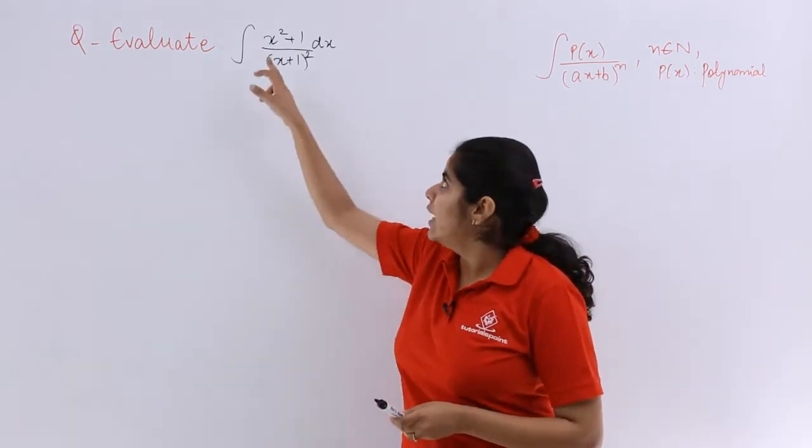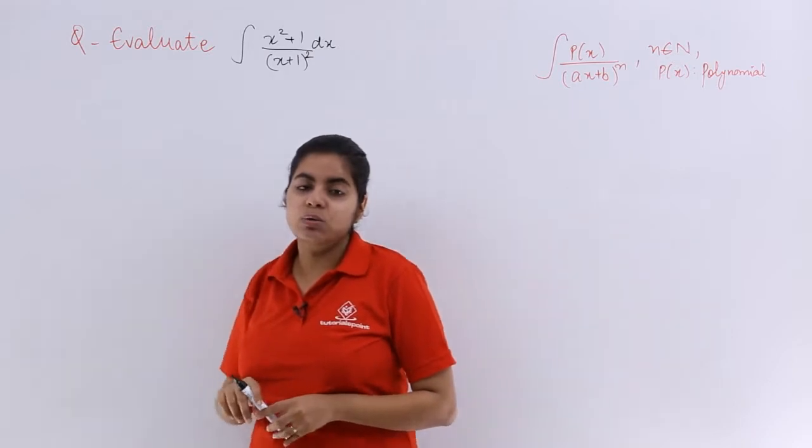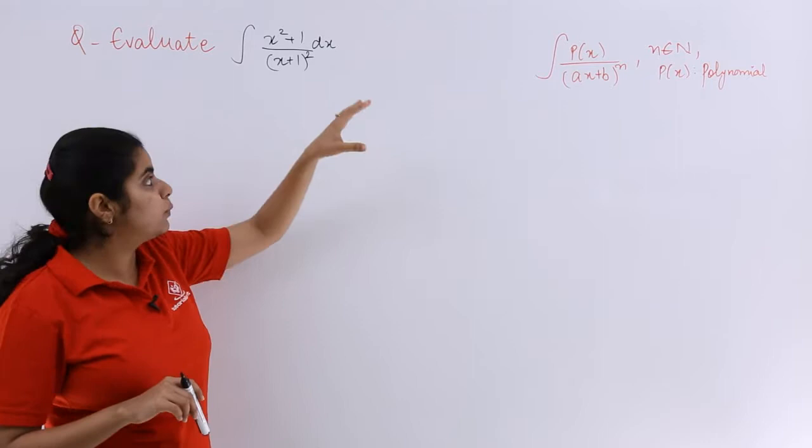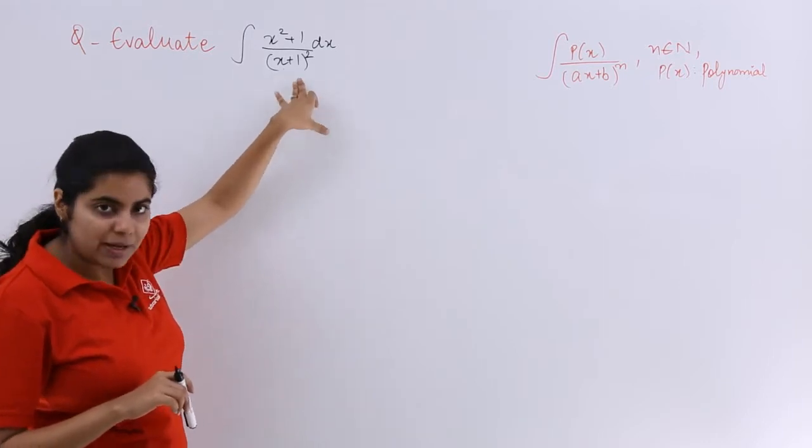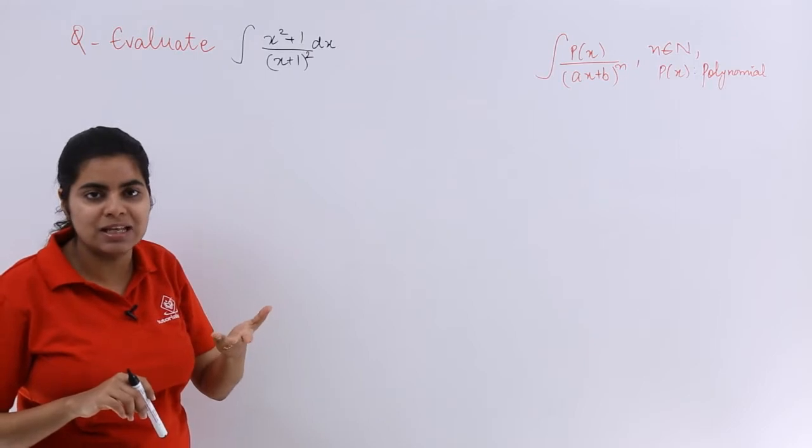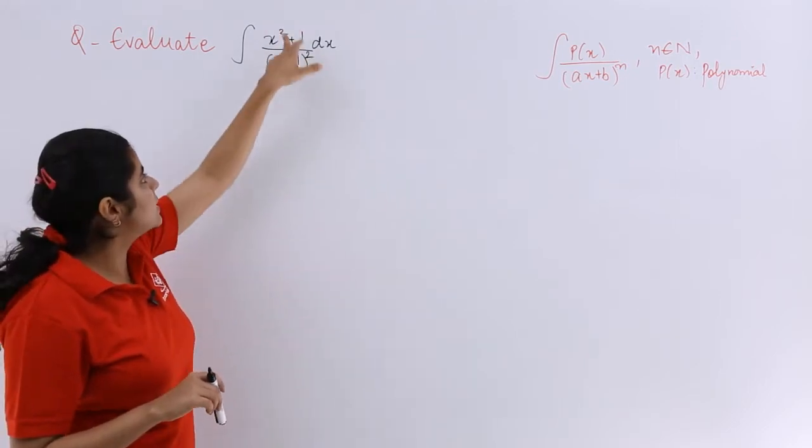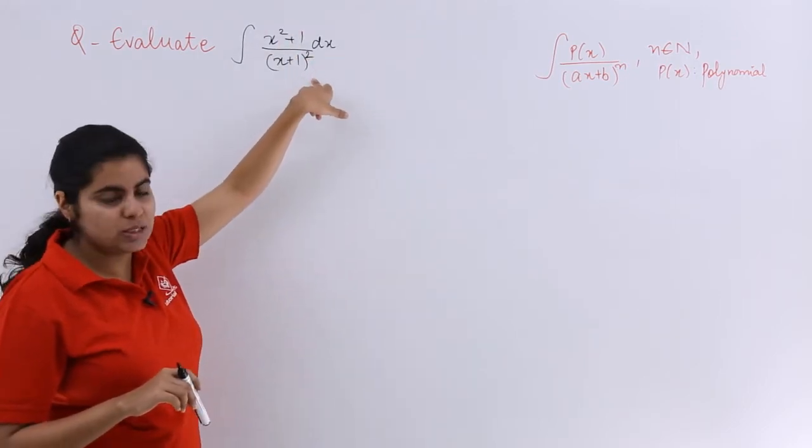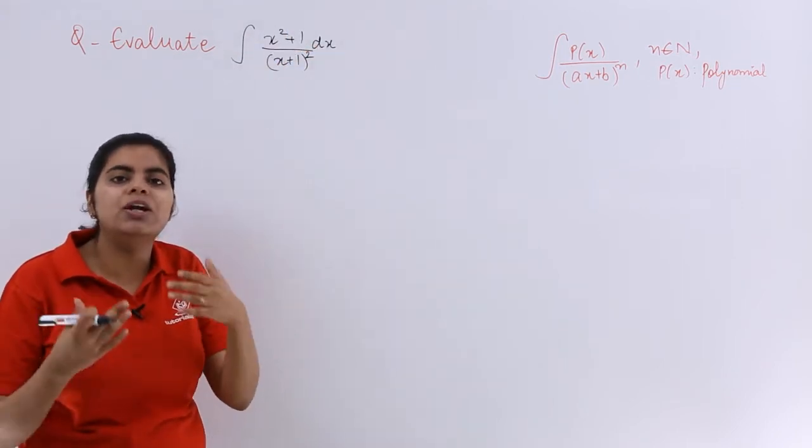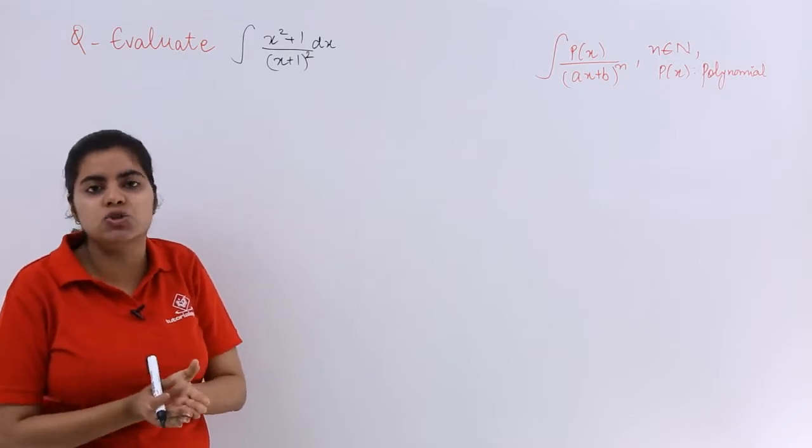So it is (x² + 1) upon (x + 1) whole square. If you can see very clearly, what would the denominator expand to? It would expand to x² + 1 + 2x. That means x² + 1 + 2x will come out, of which x² + 1 is same as what is in the numerator. So only 2x is the different thing that is coming into picture.